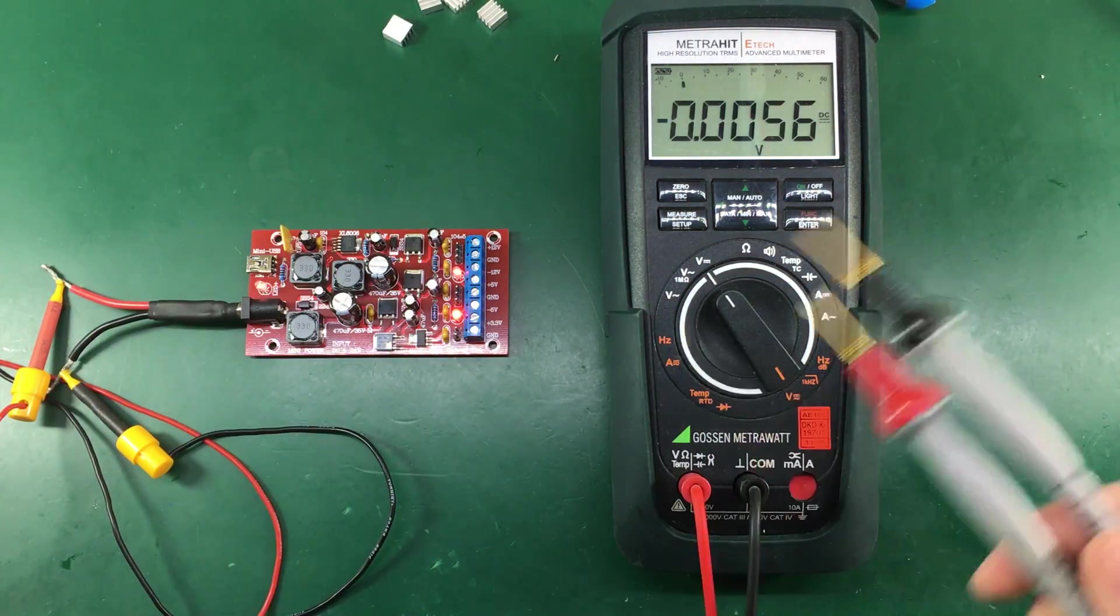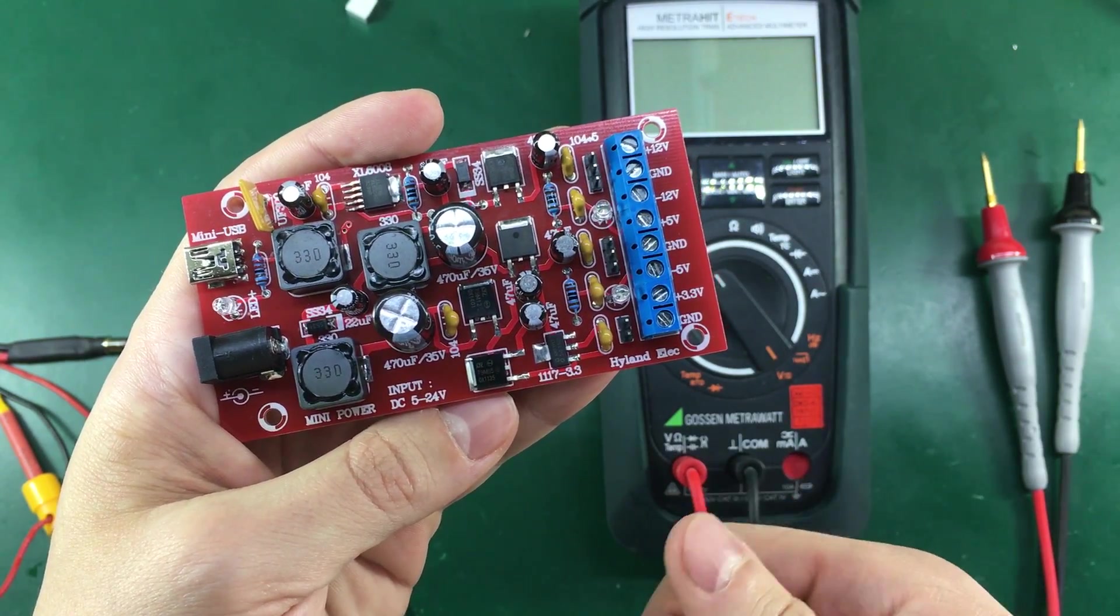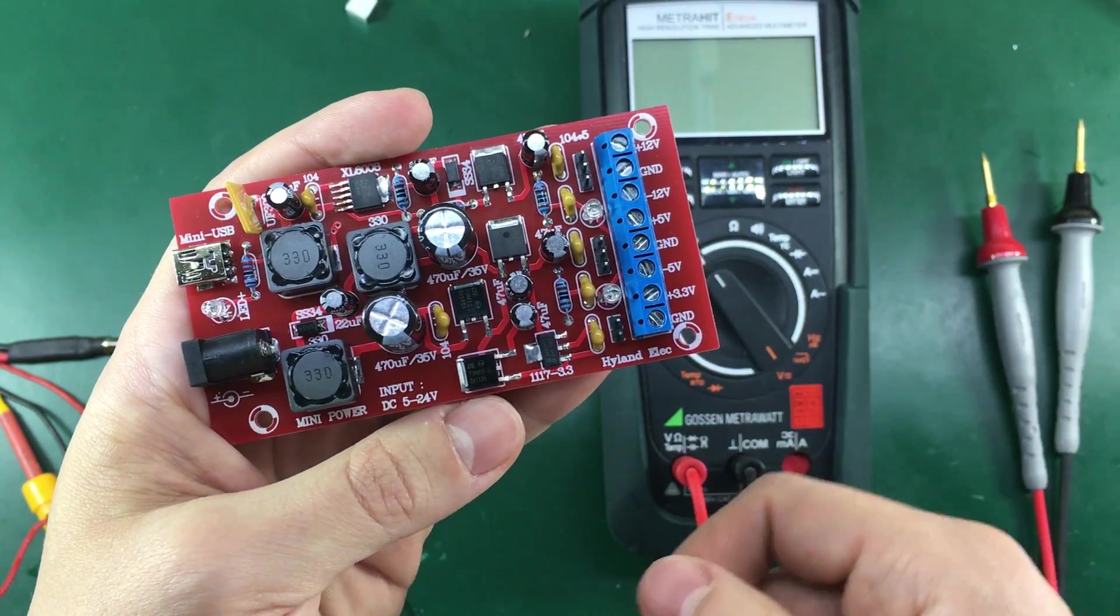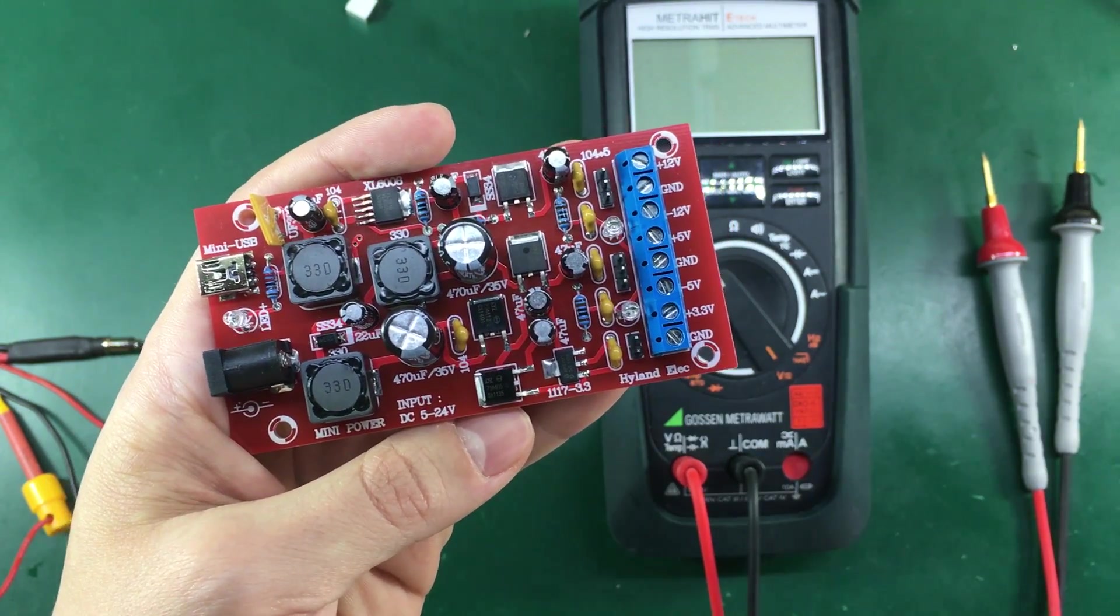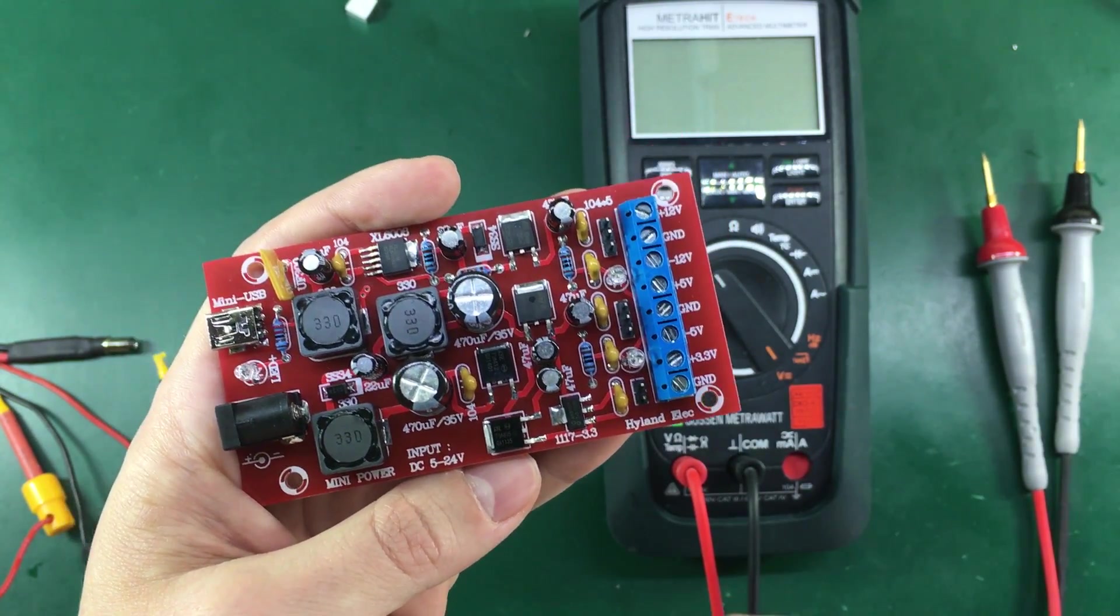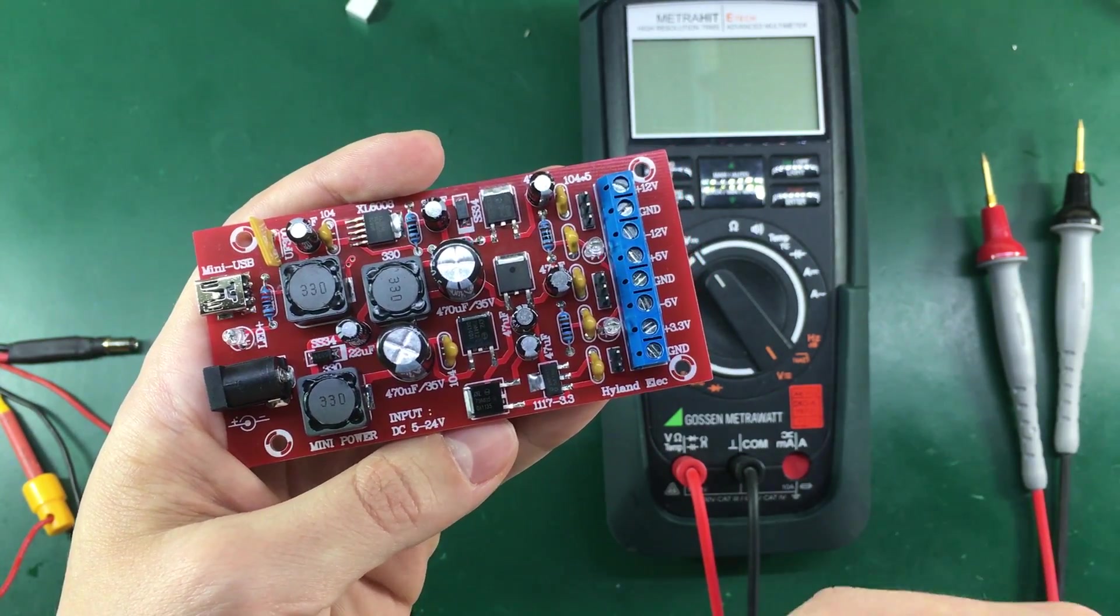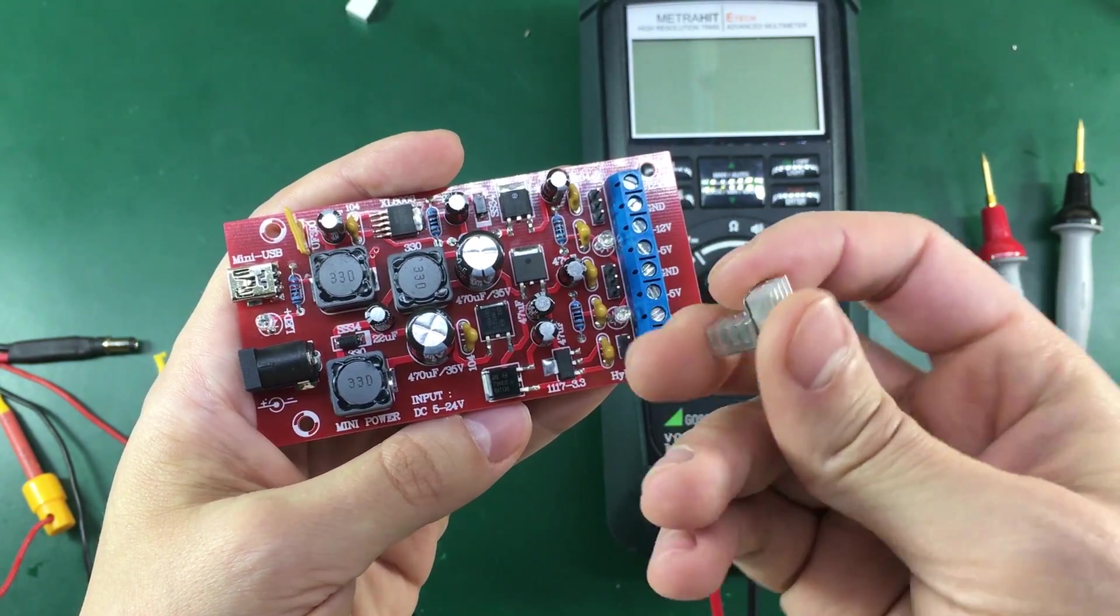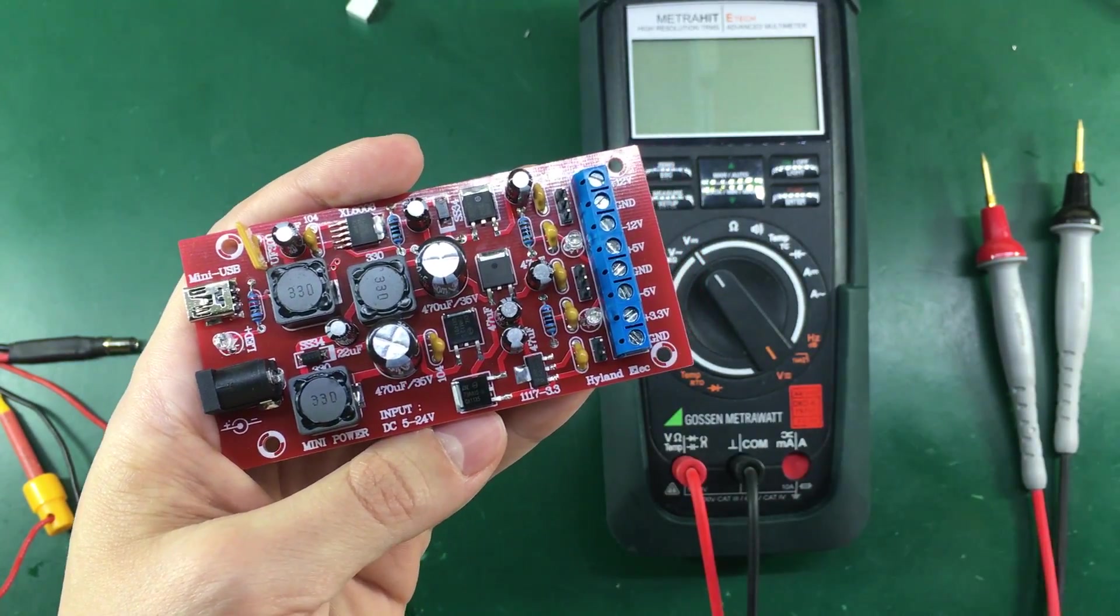So that was the assembly video for this multiple rail power supply and I hope you found this video useful. If you enjoyed it please hit the like button below. As always don't forget to subscribe and I will see you next time. I will continue by attaching these small heatsinks to each of these linear regulators.